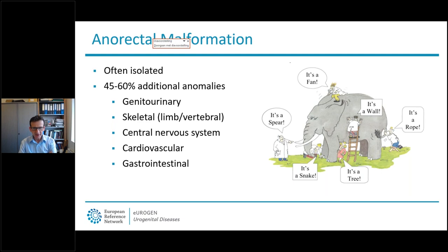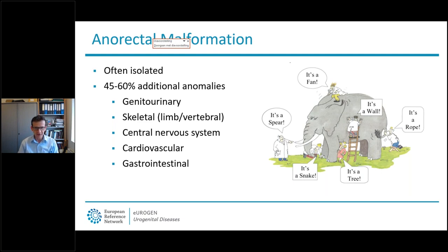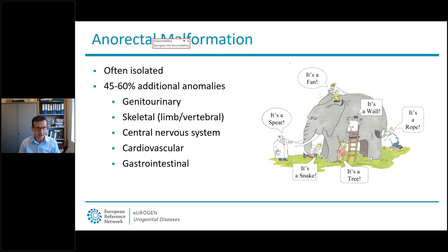Many patients have an isolated anorectal malformation but additional anomalies are found in about half of the patients. These additional abnormalities are important to recognize because they can have consequences in choosing the line of treatment but they could also point to specific syndromic causes of ARM. For this it's important to look at the complete patient — like in this cartoon, it's difficult to recognize an elephant when you are just looking at its tail or its ears, but if you look at the complete picture you might recognize it's an elephant, and that's the same for many of the syndromes.